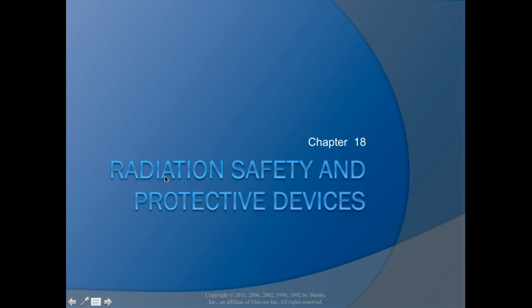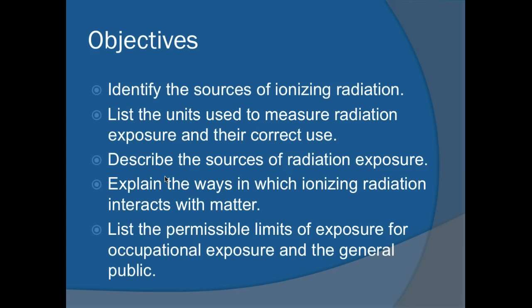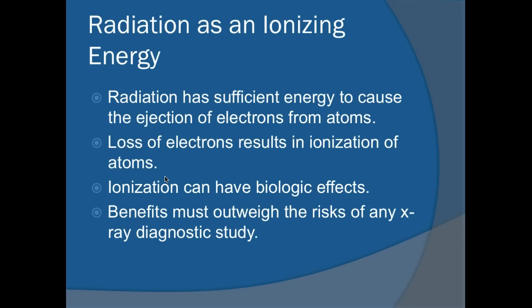We're going to start with Radiation Safety and Protective Devices. This is chapter 18 in your yellow book and chapter 9 in your Carlton Adler patient care book. I've combined the two lectures together so you have just one PowerPoint — it's got a lot in it. There are objectives; make sure you can answer all of them.